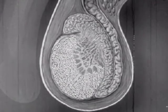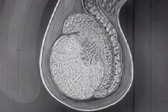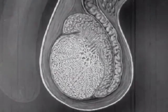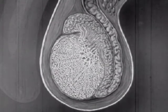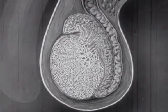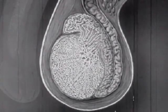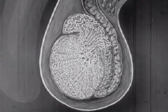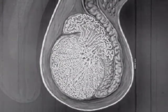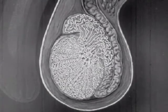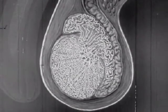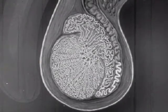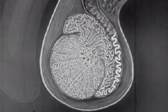Spermatozoa are constantly being formed in the testicles and are stored in the mass of curled tubes. If not emptied during sexual intercourse, they are periodically emptied during sleep in nocturnal emissions, or wet dreams. Wet dreams are a perfectly normal body function — nature's way of getting rid of stored-up sperm. Therefore, the common belief that intercourse or masturbation are necessary to relieve the pressure of stored-up sperm is absolutely not true.